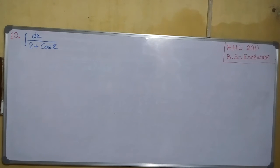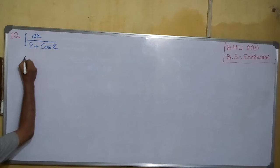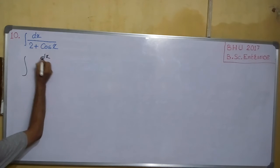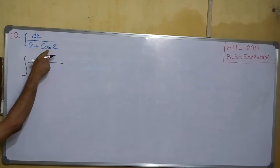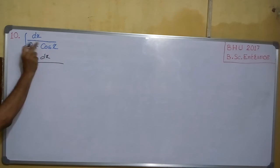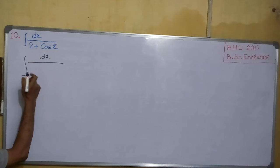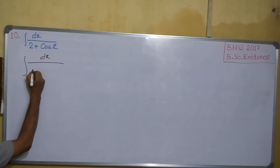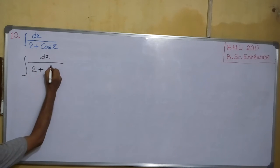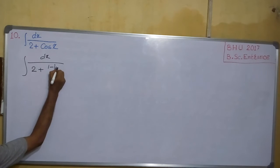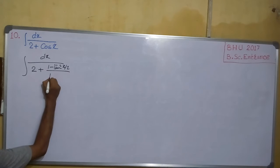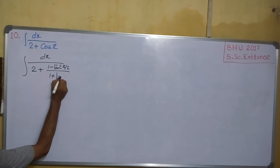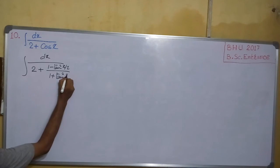Now see this next question. Follow this technique: whenever there is only cosx, only sinx, or sinx and cosx in the denominator, we will convert using the half-angle tan substitution.